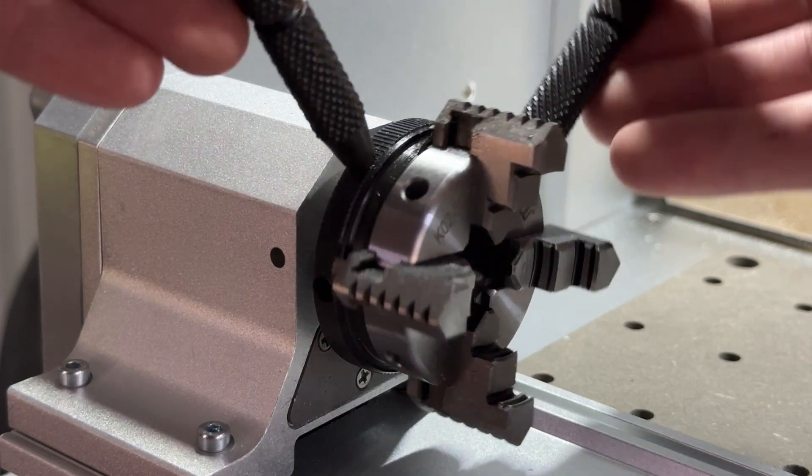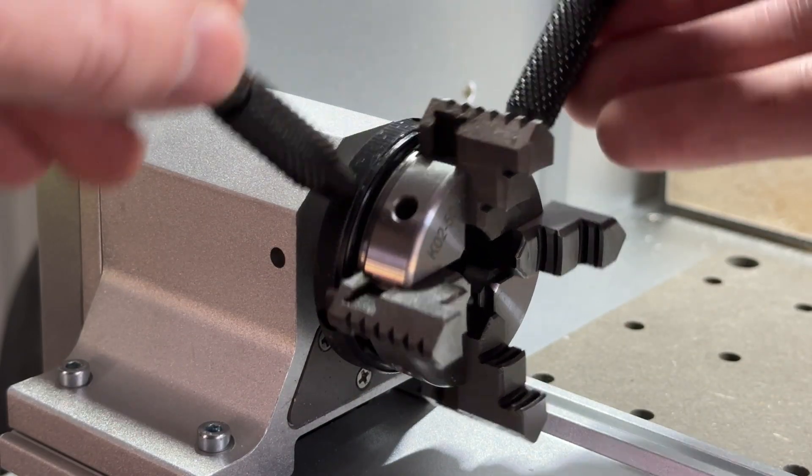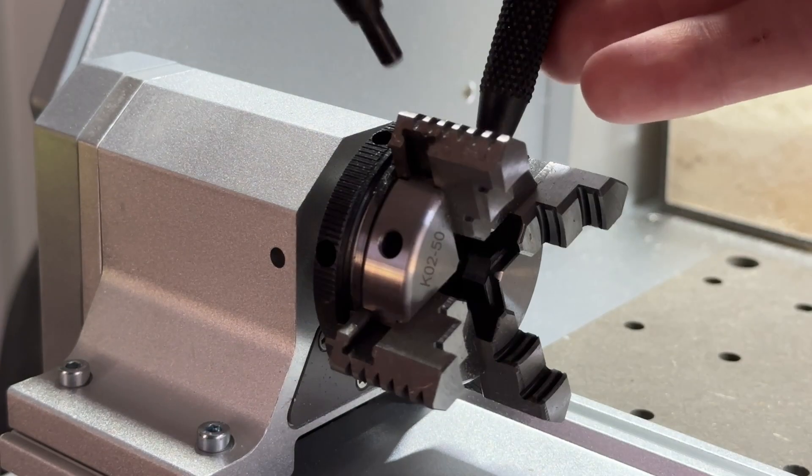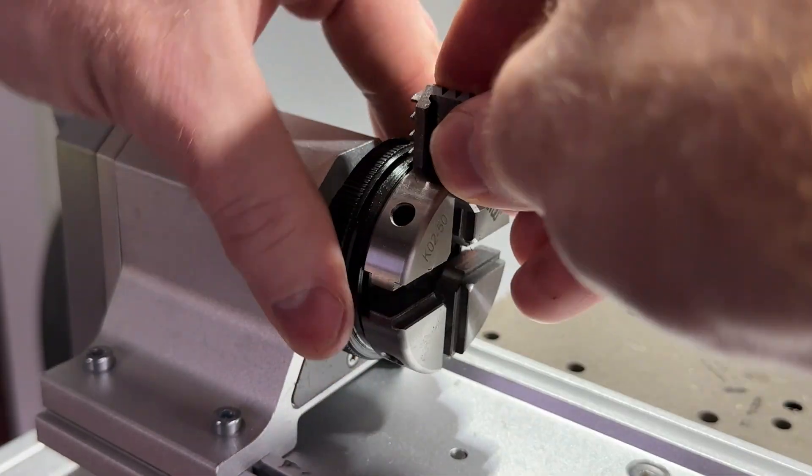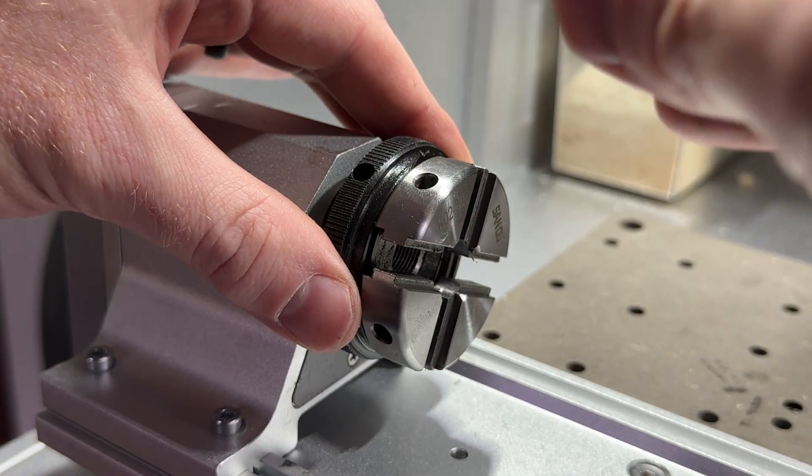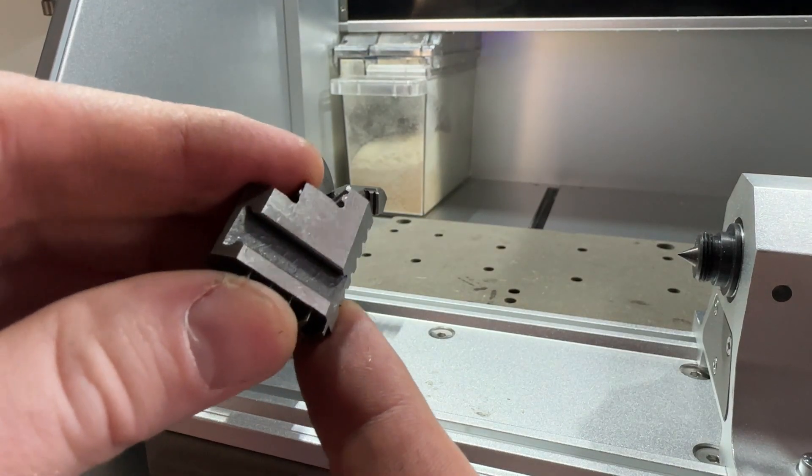To remove the jaws, loosen the chuck all the way. Note as you get closer to the outermost position, the chuck will become tighter and harder to rotate. Carefully wiggle the jaws as you loosen the chuck so they can be removed one by one. Each jaw is numbered one through four.